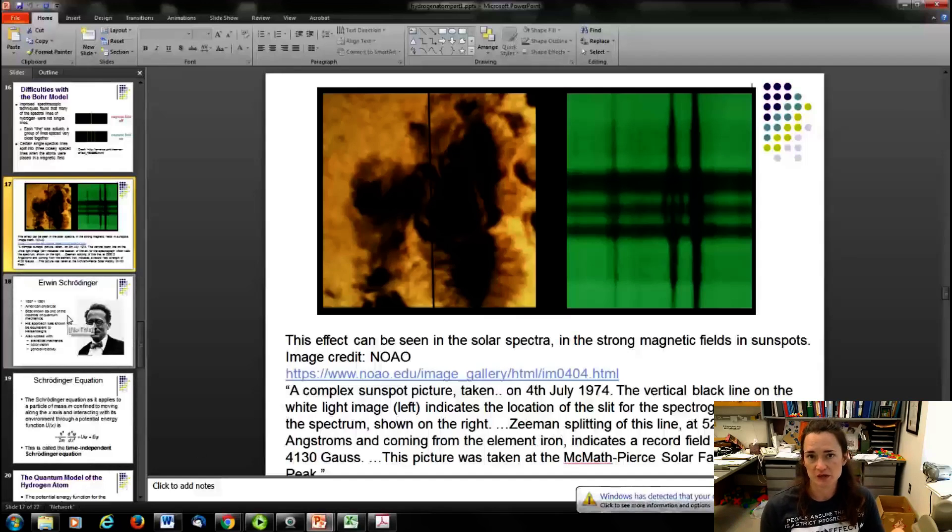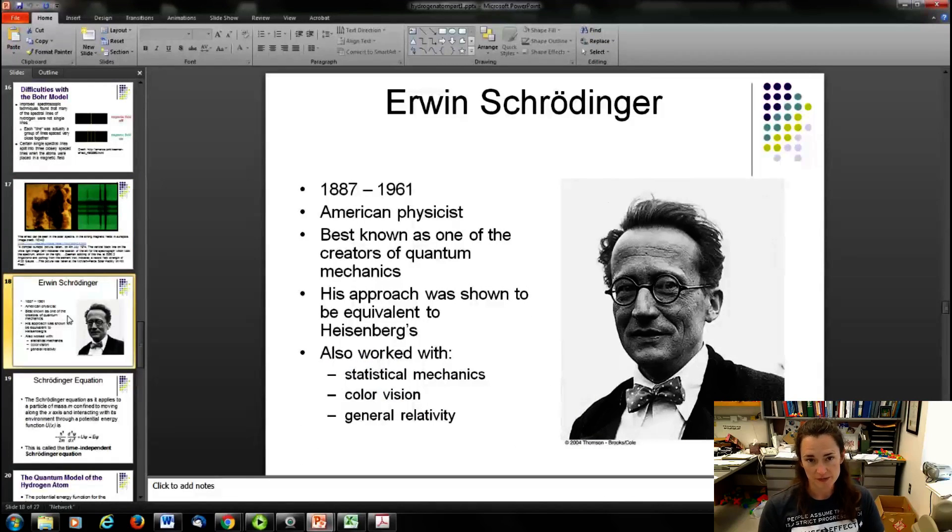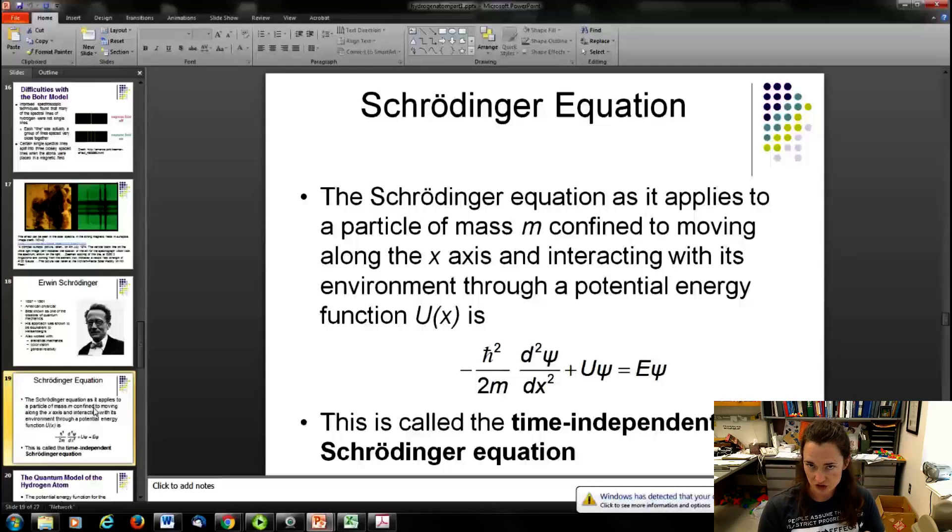It took this guy right here to figure out the solution to this problem. This is Erwin Schrödinger, an Austrian physicist. He's best known as one of the creators or architects of quantum mechanics. What he did was he developed the Schrödinger equation that we covered in modern one. Here it is: minus h-bar squared over 2m times the second derivative with respect to position of the wave function, plus the potential energy times the wave function, equals the energy times the wave function. This is the time-independent Schrödinger equation, the equation used when your potential energy function does not depend upon time. This is a one-dimensional version; we're going to have to use the three-dimensional one to solve the hydrogen atom.